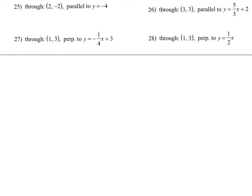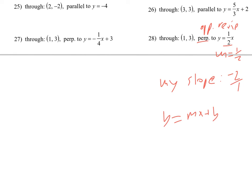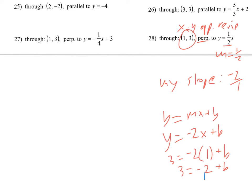Next, we're talking perpendicular, which means opposite reciprocal slope. The slope here is 1/2, so my slope is going to be negative 2 over 1, which is just negative 2. Using y = mx + b with m = negative 2, I plug in the point: 3 = negative 2 times 1 plus b. Adding 2 to both sides gives b = 5. So the final answer is y = negative 2x + 5.